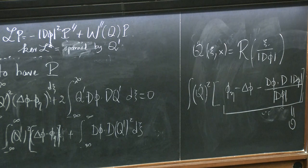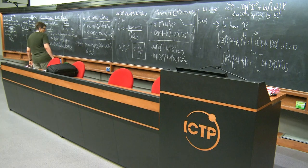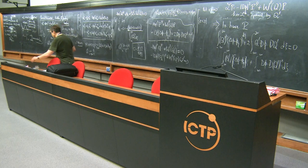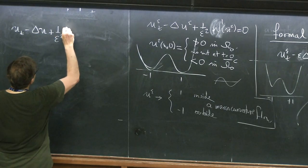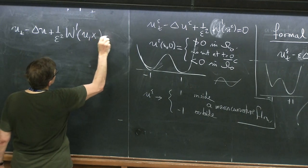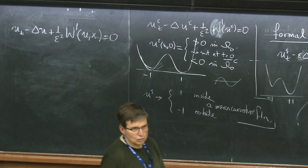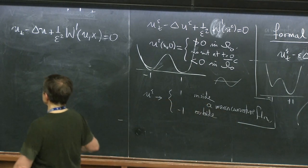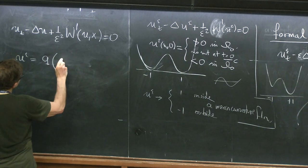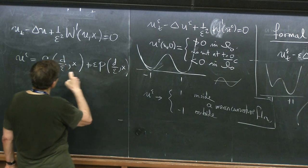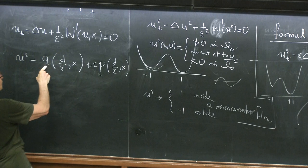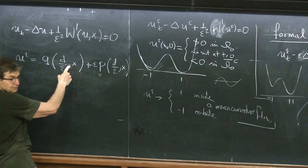Just five minutes — I need to bridge with the next lecture. This approach that I presented has limitations. Next time I'm going to show you how to look at problems with additional dependence. The answer will be that U epsilon looks like Q of distance over epsilon, plus epsilon times P times distance over epsilon times x. And we're going to have to choose P so that we can control the errors we make when we bring in x-derivatives of Q.